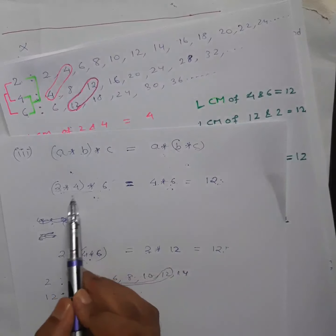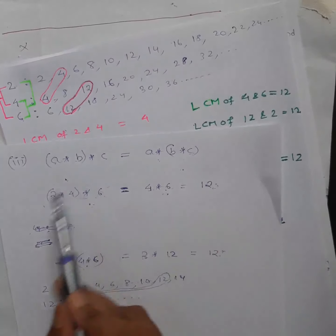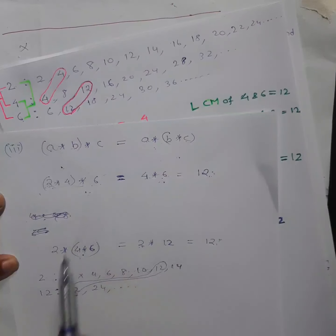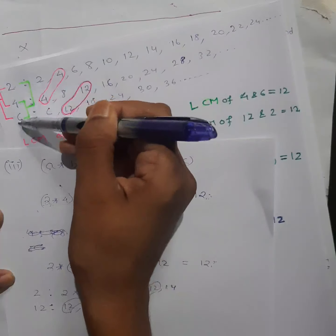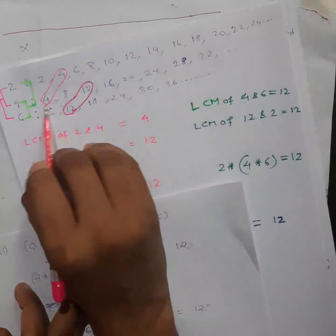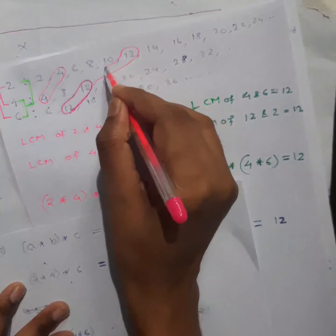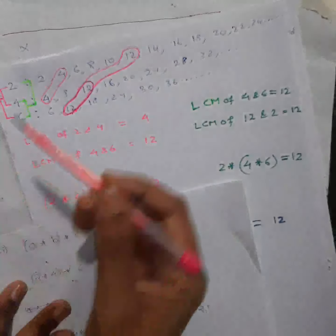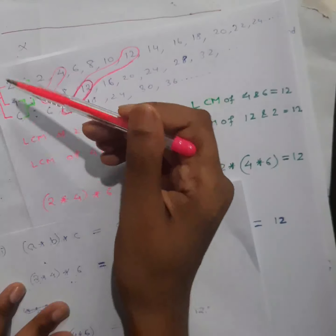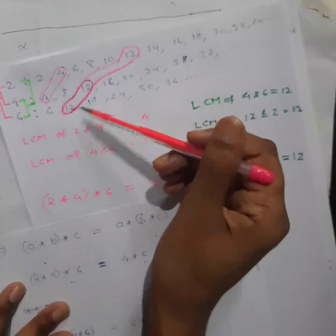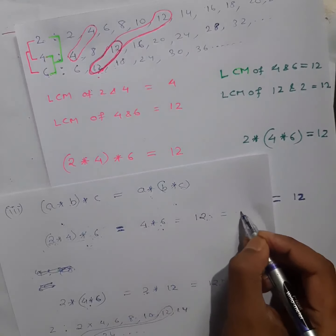Now with some example alone you cannot show it — it must hold for all elements. It will satisfy. See why: instead of finding step by step, if I find LCM of 2, 4, and 6 all together, I also get 12. It does not matter whether you find this two first and then with the third, or all three at once — in LCM, the answer is the same.